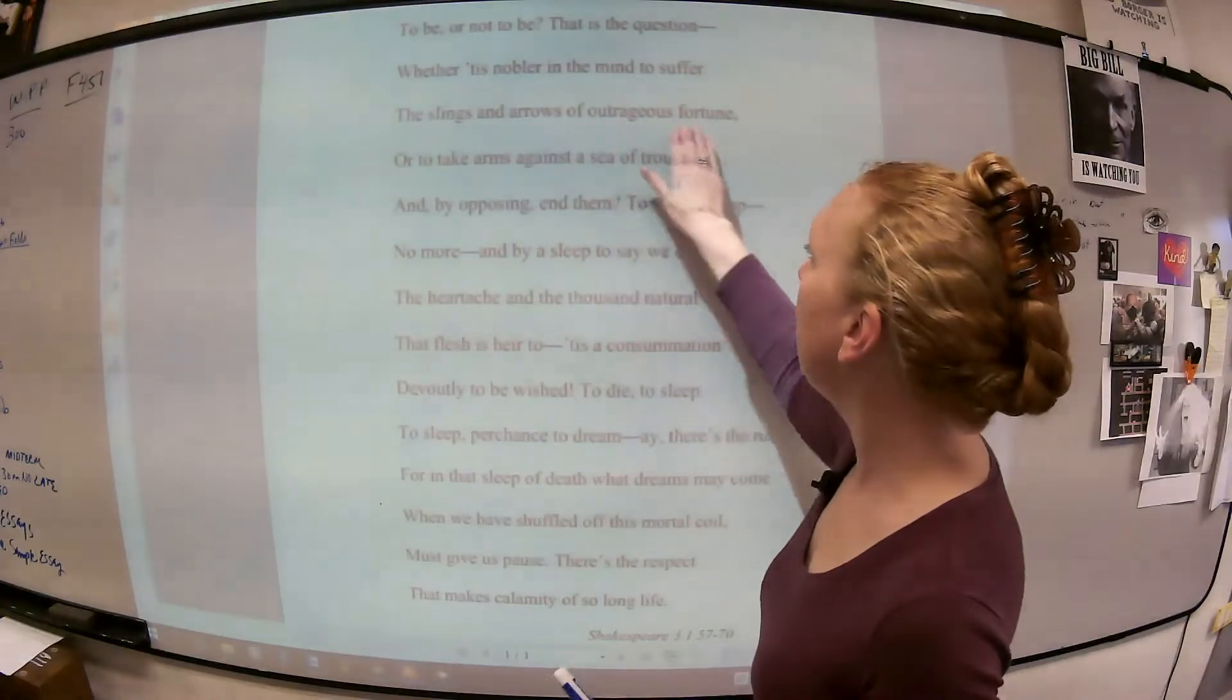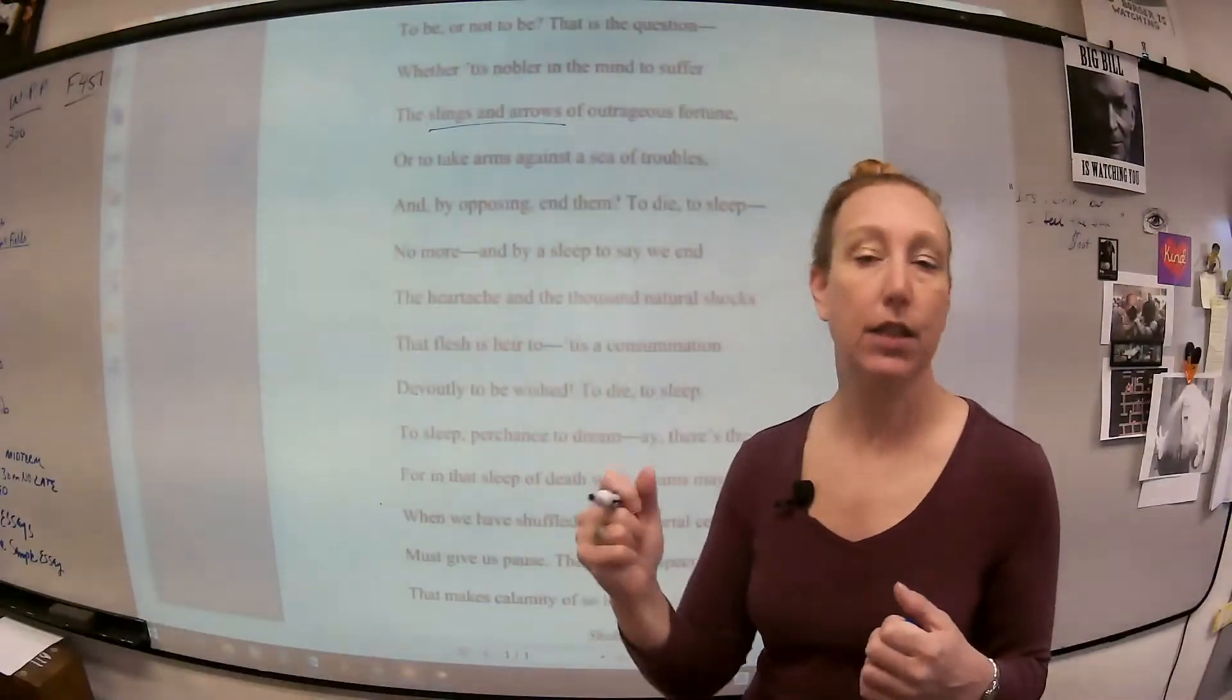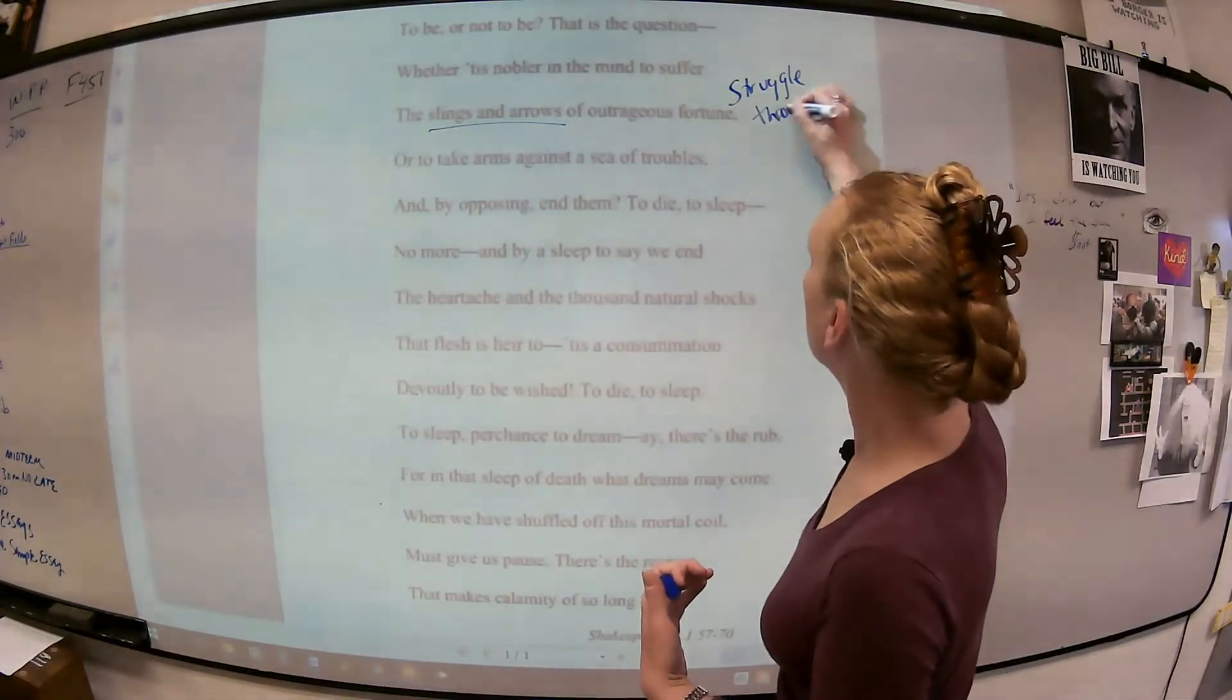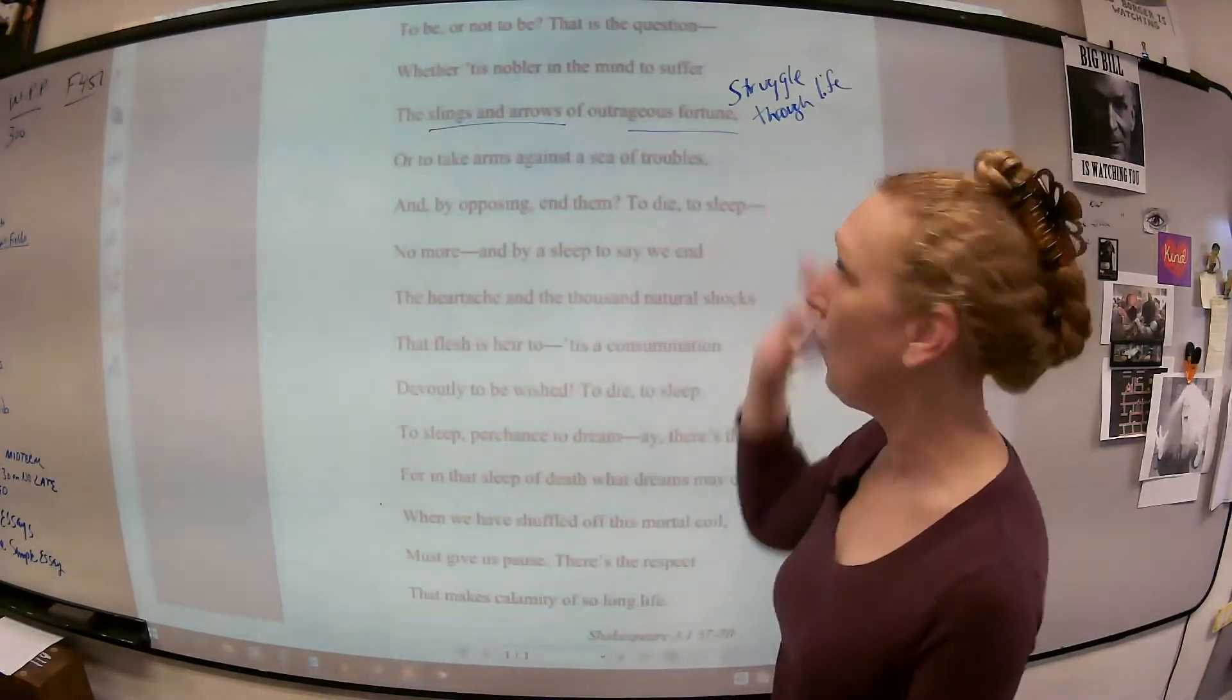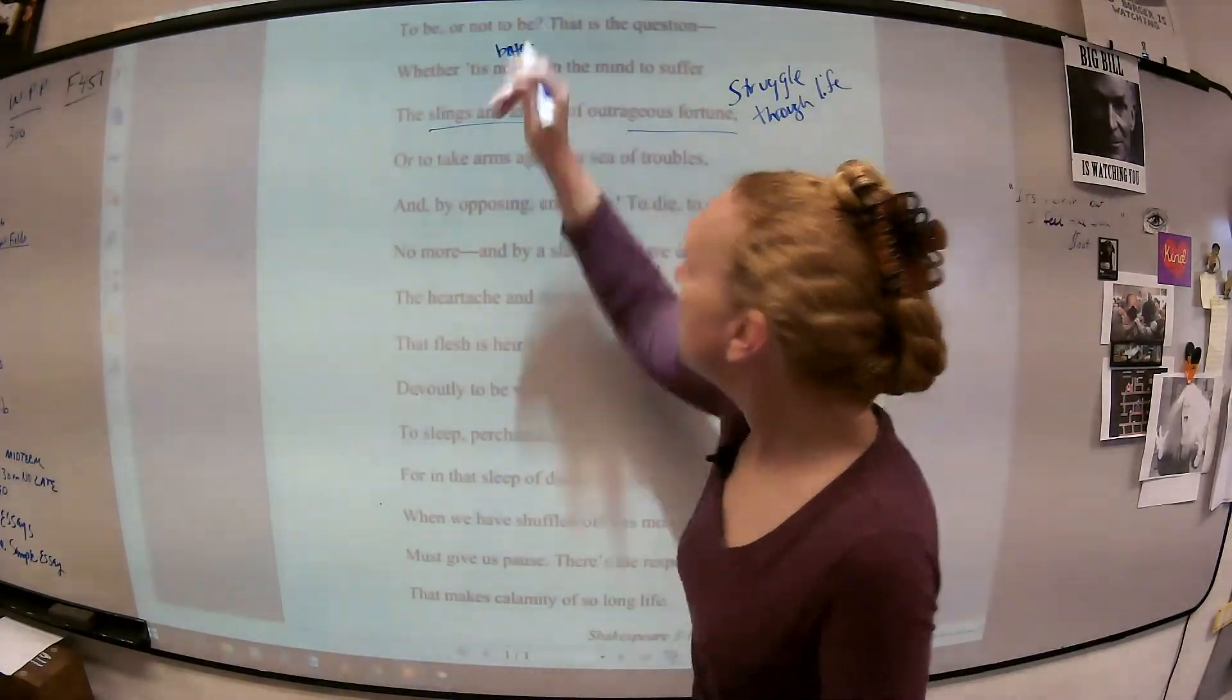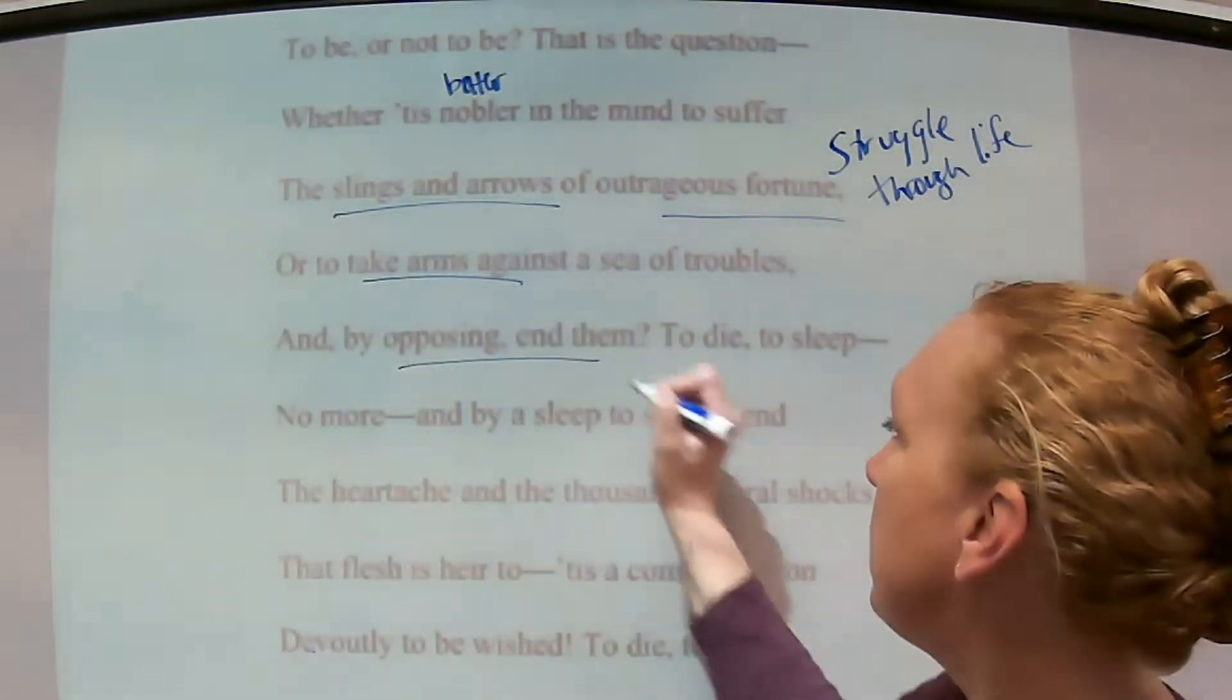Whether it is nobler in the mind to suffer the slings and arrows of outrageous fortune. Slings? You don't know what slings are? You know what arrows are. Arrows are weapons, or ammunition. Slings are like slingshots. Is it better to suffer and struggle through life? The outrageous fortune of life. This is a guy who's had some serious struggles in his life, or the outrageous fortunes of things like a pandemic and all the different kinds of struggles that go with that. Is it nobler? Is it better? Is it better to suffer the slings and arrows of outrageous fortune, to struggle through life, or to take arms against a sea of troubles and by opposing end them?